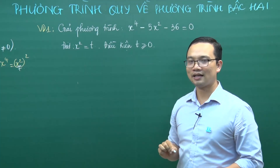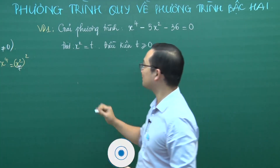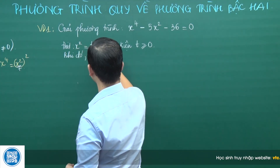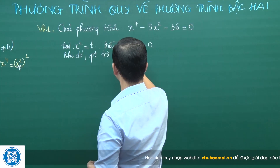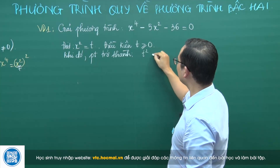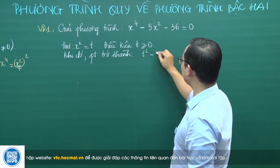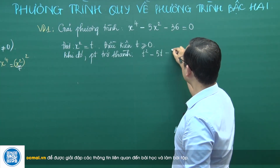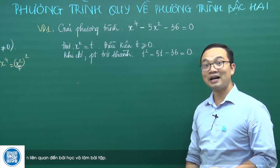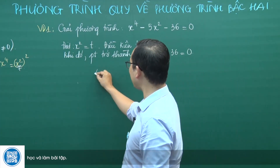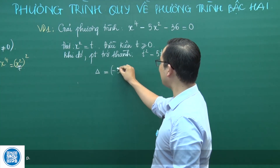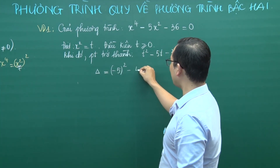Khi đó phương trình trở thành t² - 5t - 36 = 0. Đây là phương trình bậc 2. Để giải phương trình bậc 2 này, các bạn tính Δ. Δ = B² - 4AC = (-5)² - 4·1·(-36) = 25 + 144 = 169.